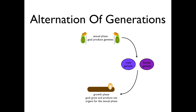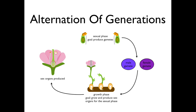This seed begins the growth phase. The new plant grows from the seed and matures until it can produce sex organs. When the sex organs form, the sexual phase can begin again and the cycle is completed.